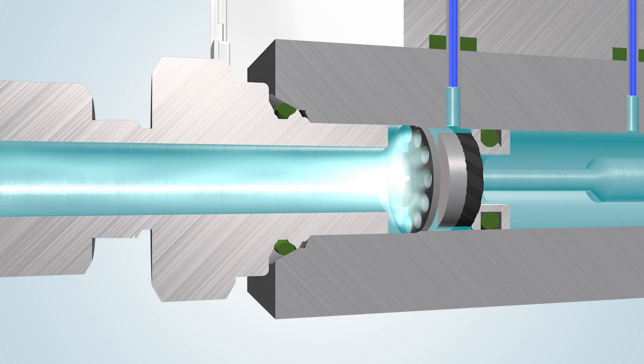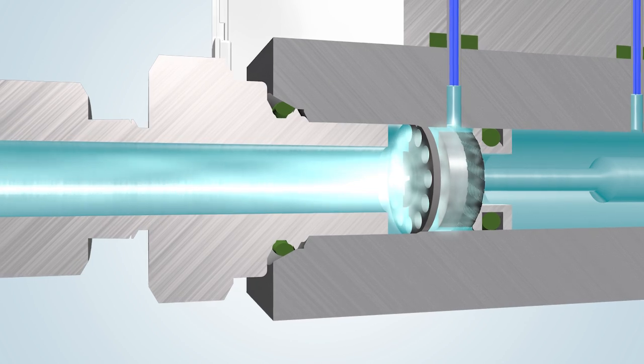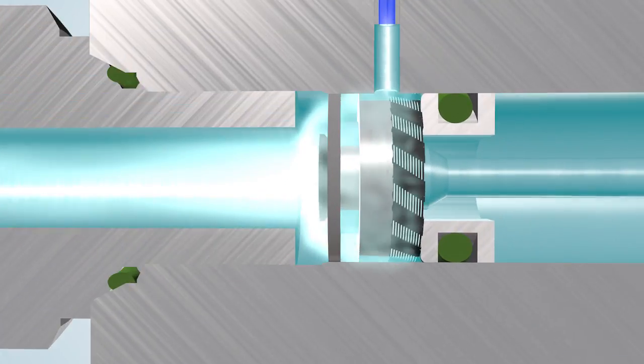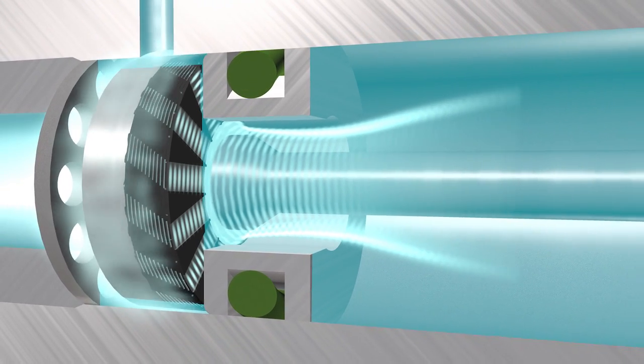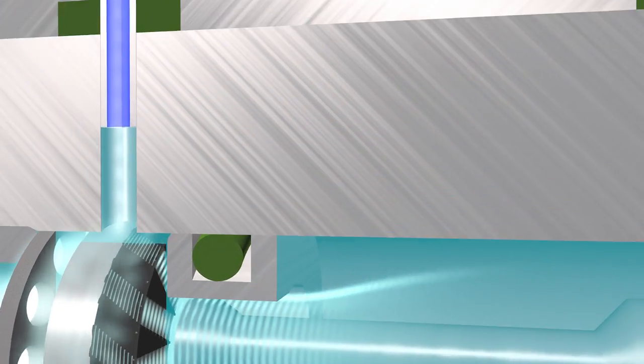The gas flows through the laminar flow element, which serves as a perfectly predictable flow resistance. This makes it possible to build and to calibrate an instrument for use on nitrogen and to model it for any other gas.